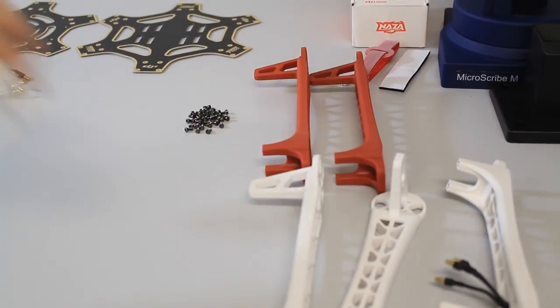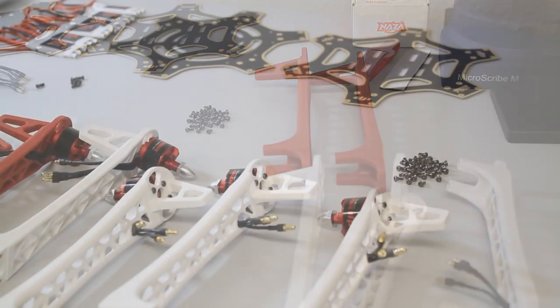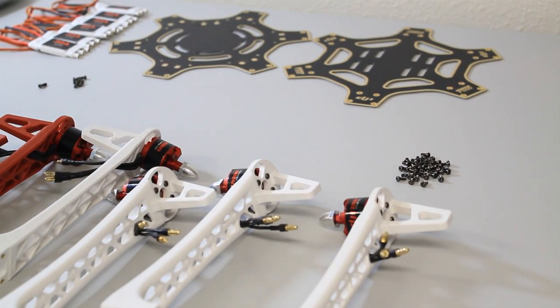Set that to the side, and go to the next one. So now we're ready to move on to the next step, which is going to be getting the ESCs and the battery lead to the power distribution board.